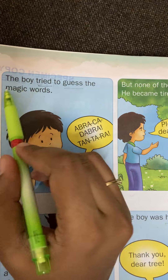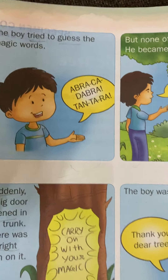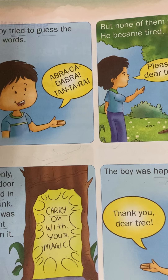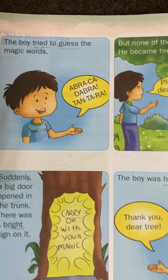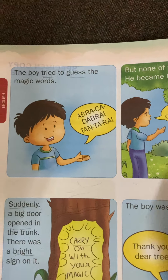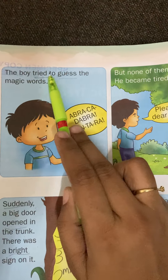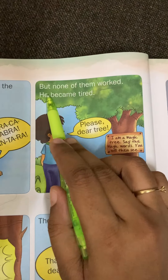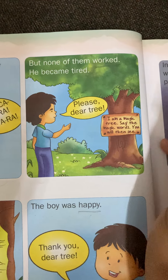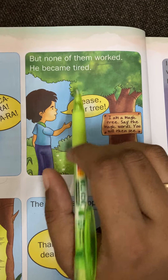The boy tried to guess the magic words. Usually in a magic show, the magician says 'Abracadabra' or 'Tantara' — those are magic words. So the boy tried all these words, but none of them worked. The boy tried all the possible magic words he knew, but nothing happened.